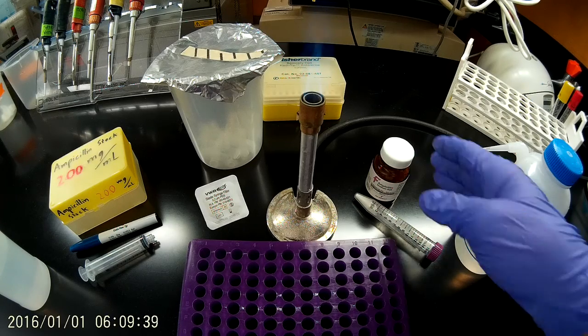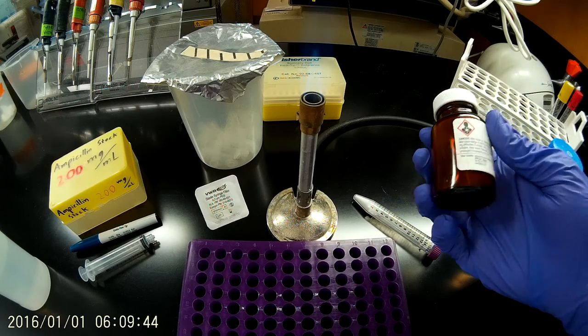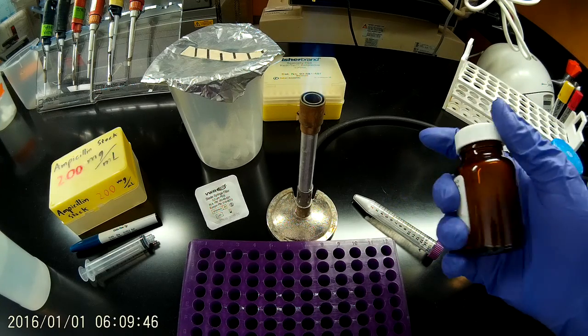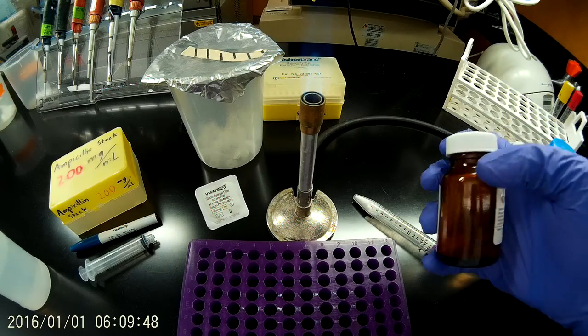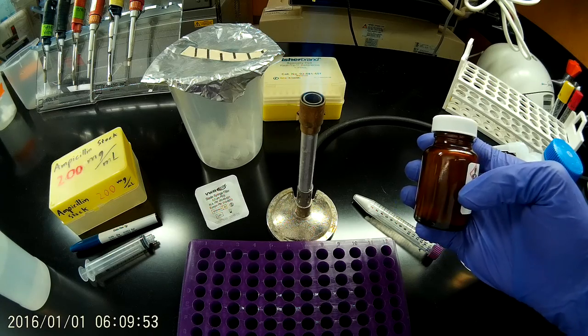To start, first we're going to remove our ampicillin from the refrigerator. It's stored at between 2 and 8 degrees Celsius. When you remove something from the refrigerator before opening, make sure that you allow it to warm to room temperature so that water doesn't condense into the powder and cause it to degrade faster when you put it back in storage.